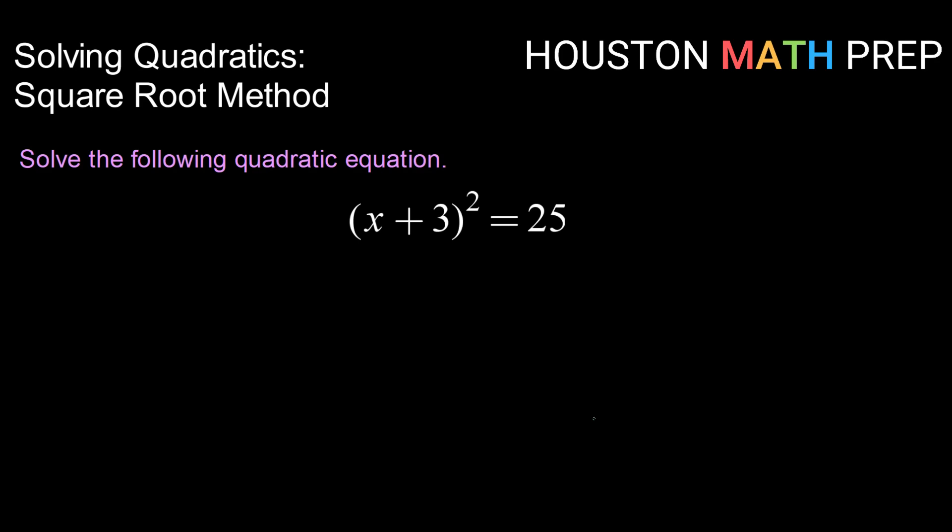Alright, so here we've already got our squared stuff on one side, right? We have x plus 3 in parentheses squared equals 25. I'd like to get x by itself, so the first thing that I need to do is get rid of this squared. I know that I can do that by square rooting both sides.